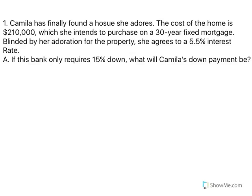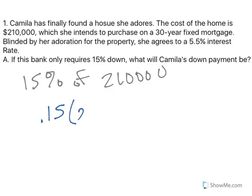Blinded by her adoration for the property, she agrees to a 5.5% interest rate — and that's kind of high for a house; it's going to cost her a lot of money. If the bank requires 15% down, what will her down payment be? It's 15% of the purchase price, which is $210,000. So .15 times $210,000 equals $31,500.